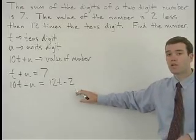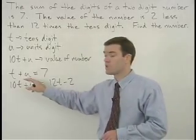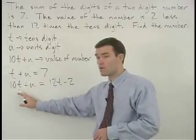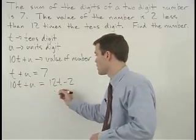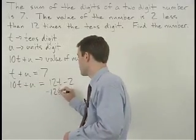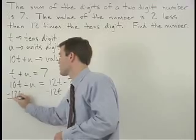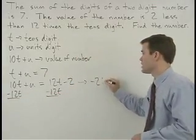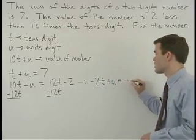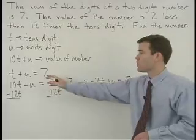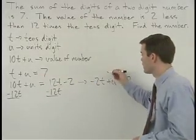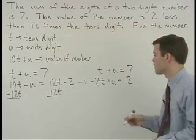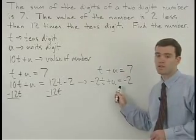Now we have two equations set up that we can use to solve for t and u. First, move the 12t over to the left side in the second equation by subtracting 12t from both sides to get negative 2t plus u equals negative 2. Rewriting our first equation above it: t plus u equals 7. We can now solve our system by addition.